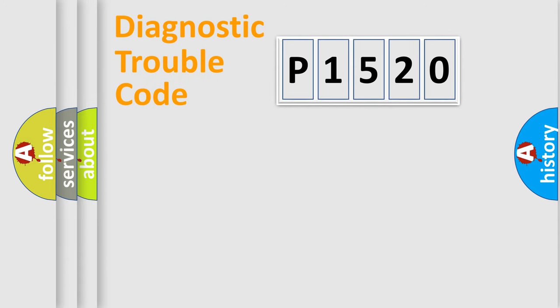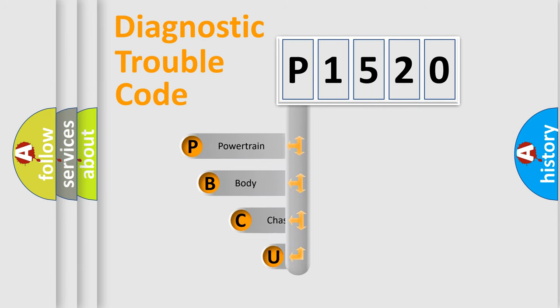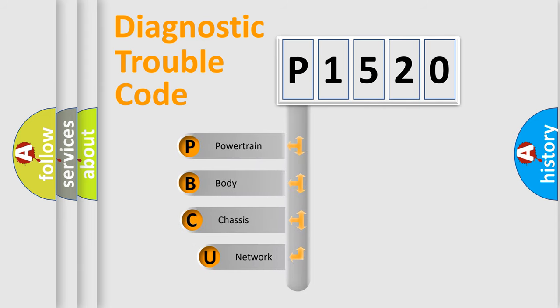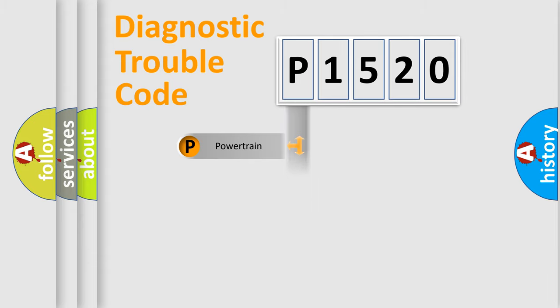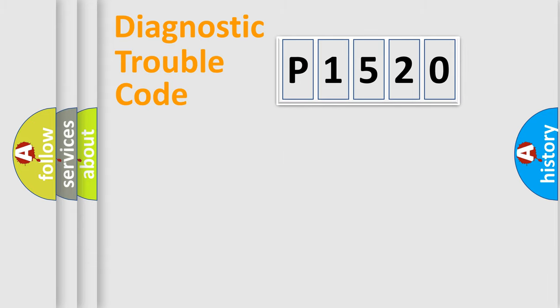Let's look at the history of diagnostic fault code composition according to the OBD-II protocol, which is unified for all automakers since 2000. We divide the electrical system of an automobile into four basic units: Powertrain, Body, Chassis, and Network.